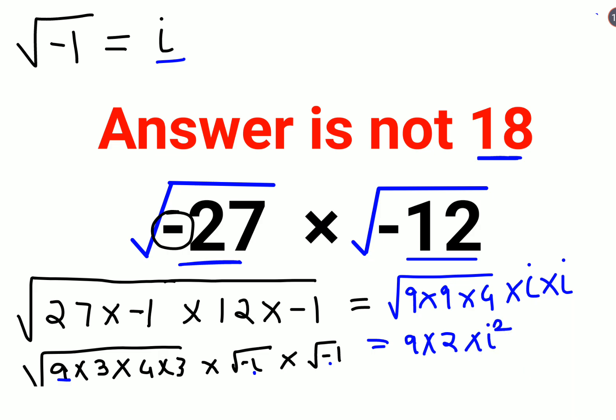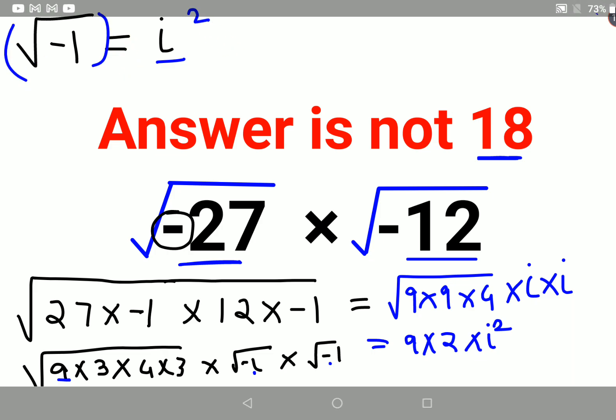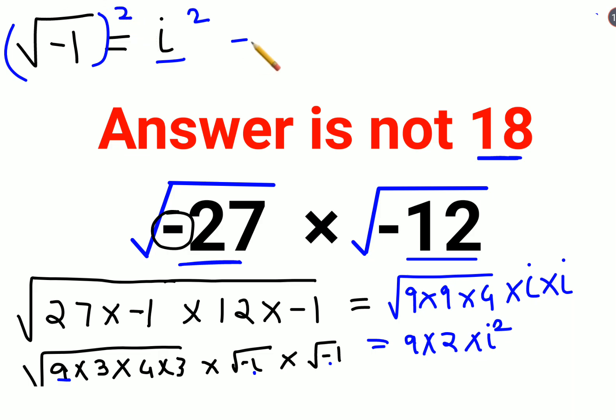If I wanted to find the value of i square, I just had to square both sides. And from this I can say i square is nothing but minus 1. So you are getting 9 into 2 into minus 1, so answer comes out to be minus 18.